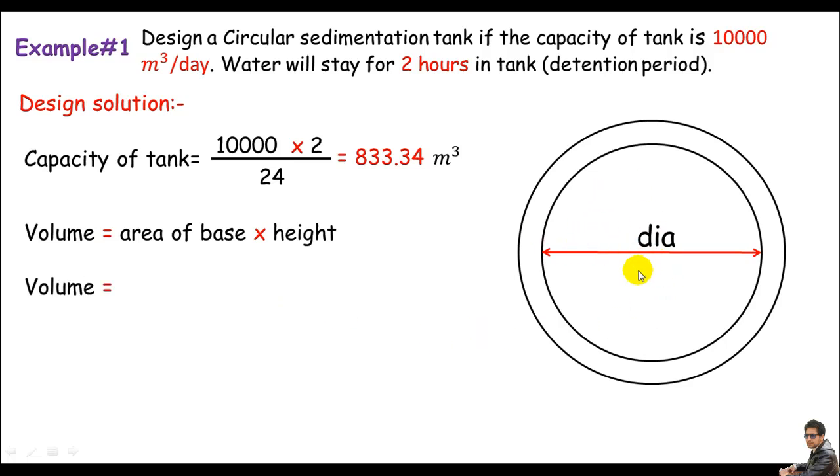This is a circular sedimentation tank. So the area of the base will be pi D² divided by 4 or just pi r². You can use one of these formulas times the height or the depth.